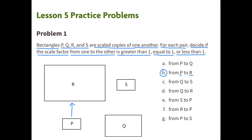B. From P to R. The scale factor is also greater than 1. R is a larger scaled copy than P.